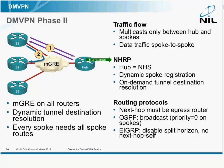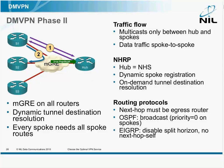NHRP is now used for two things. First, for dynamic spoke registration with the hub, and for on-demand destination resolution. When the spoke tries to talk to some other spoke, it has to ask the hub where the other spoke is.